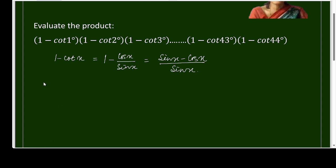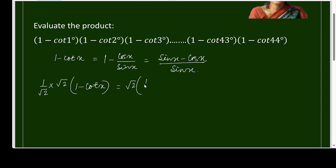If I multiply and divide by √2 in this (1 - cot x), the numerator will become √2 · (1/√2 · sin x - 1/√2 · cos x), all over sin x.